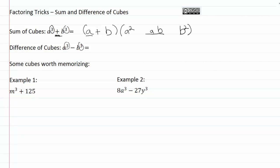When looking at this, I need to have some signs. Our acronym is SOAP: Same, Opposite, Always Positive. The first sign is going to be the same as whatever we had in the original expression. Here we had a plus sign, so we have a plus sign in our final expression. Then over here we have the opposite, so the opposite of positive gives us a negative. And the last sign is always positive, so that will be a plus.